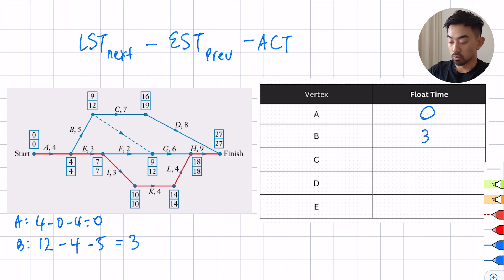Let's look at C now. So C is here. I look at the next activity, the next late is 19, so 19 minus the previous early which is 9 minus the activity which is 7. So 19 minus 9 is 10, 10 minus 7 is 3. So C is 3 as well.